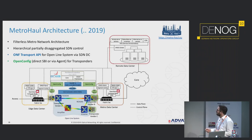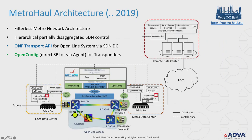Looking to the future: a Metro Haul research project integrates an optical domain, transponders with OpenConfig agents, a Transport API to configure the open line system, into another open-source SDN controller ONOS. Edge data centers and metro data centers are connected in a whole orchestration environment integrated into OpenStack and NFV open-source MANO.